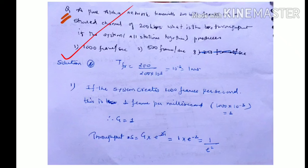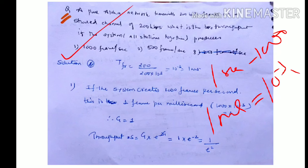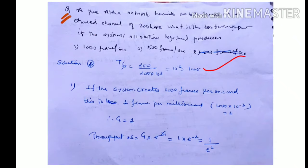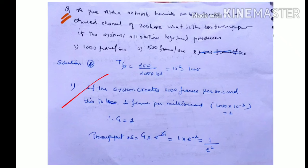For 1000 frames per second: in 1 millisecond we transmit 10⁻³ × 10³ = 1 frame, so G = 1. G is the average number of frames generated by the system during one frame transmission time. Since the frame transmission time is 1 millisecond and the system creates 1000 frames per second, that is 1 frame per millisecond, so G = 1. Pure Aloha throughput: S = G · e^(−2G), so with G = 1, S = 1/e² ≈ 0.135.